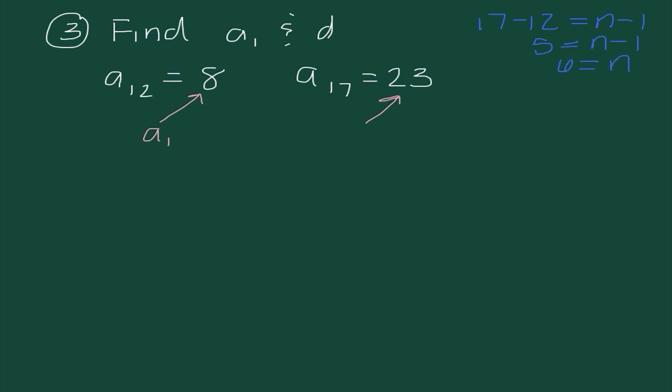So I'm going to do a sub n equals a sub 1 plus n minus 1 times d. We should absolutely have this memorized by now. This time it's going to be 23 equals 8 plus 6 minus 1 times d. So 23 equals 8 plus 5d. 15 equals 5d. So 3 is our common difference. As soon as I know that that is our common difference, I'm going back to our original values.